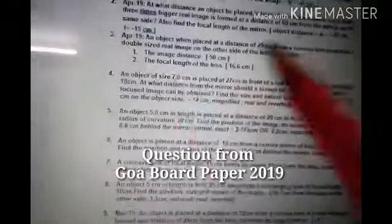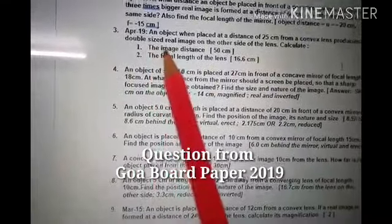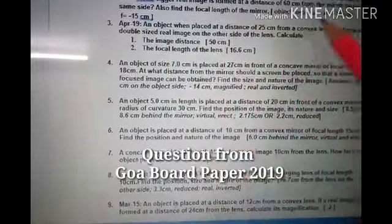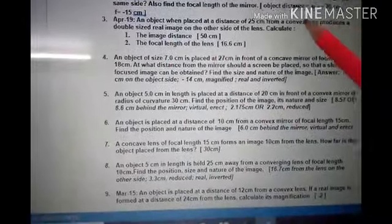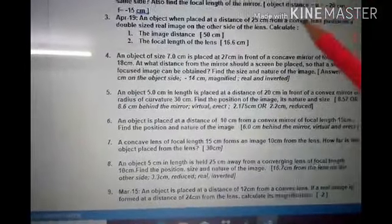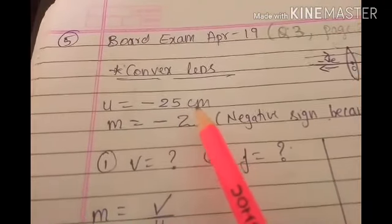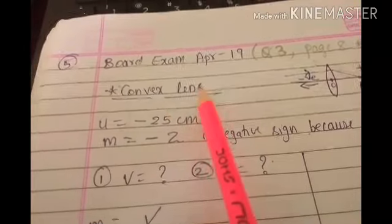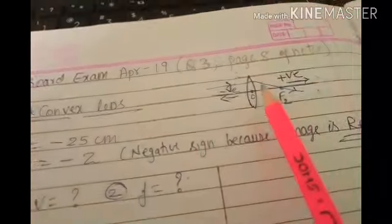Hello students, the next question is from April 2019 Goa board paper. An object is placed at a distance of 25 cm from a convex lens, so U equals minus 25 cm. Remember, it's a convex lens.